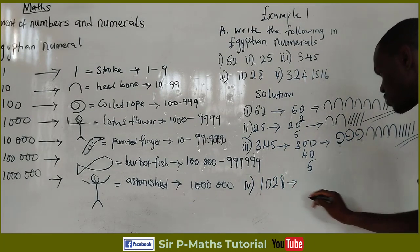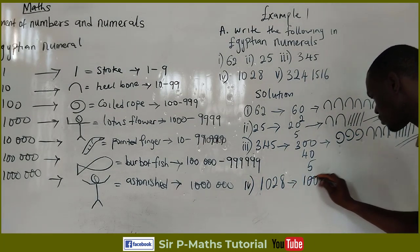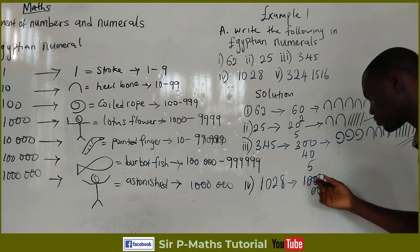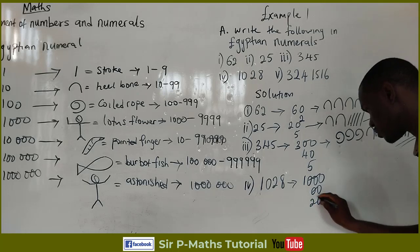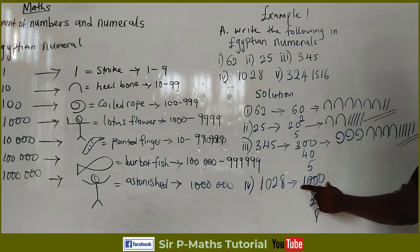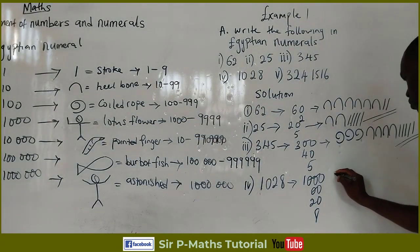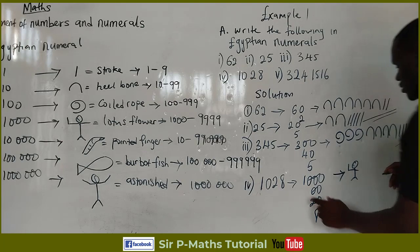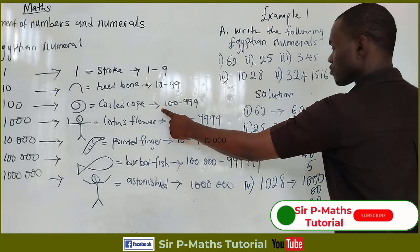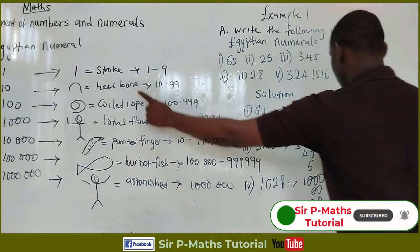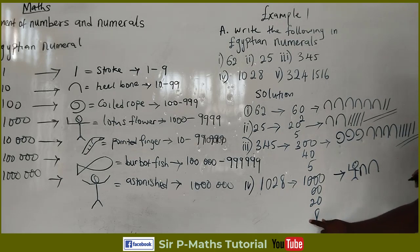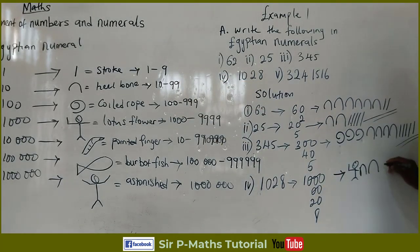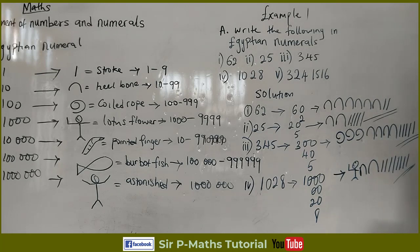The fourth example is 1,028. Let's split it: I have one thousand, zero hundreds, twenty in the tens, and eight units. The symbol for thousands is the lotus flower, so I'll draw one lotus flower for one thousand. Since I have zero hundreds, I skip the coiled rope. For 20, I'll use two heel bones. For 8, I'll use eight strokes. So this combination represents one thousand and twenty-eight in Egyptian numerals.